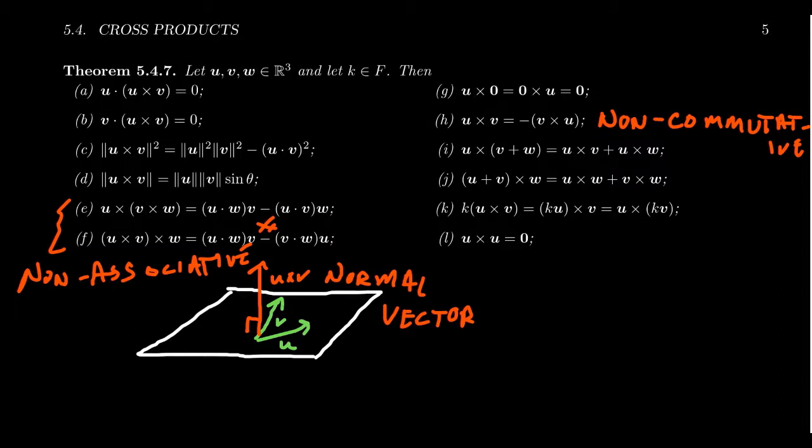If you take the cross product with the zero vector, you end up with the zero vector. And this comes from the fact that the cross product is a distributive operation. It distributes across addition.